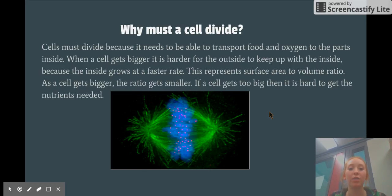This represents surface area to volume ratio. As a cell gets bigger, the ratio gets smaller. If a cell gets too big, then it is too hard to get the nutrients needed.